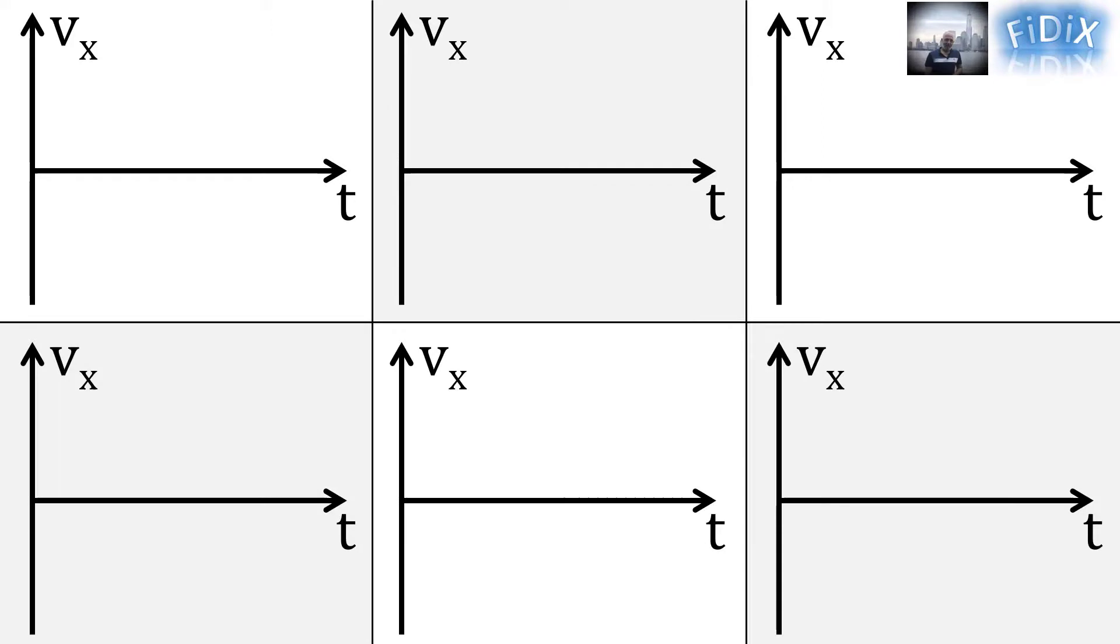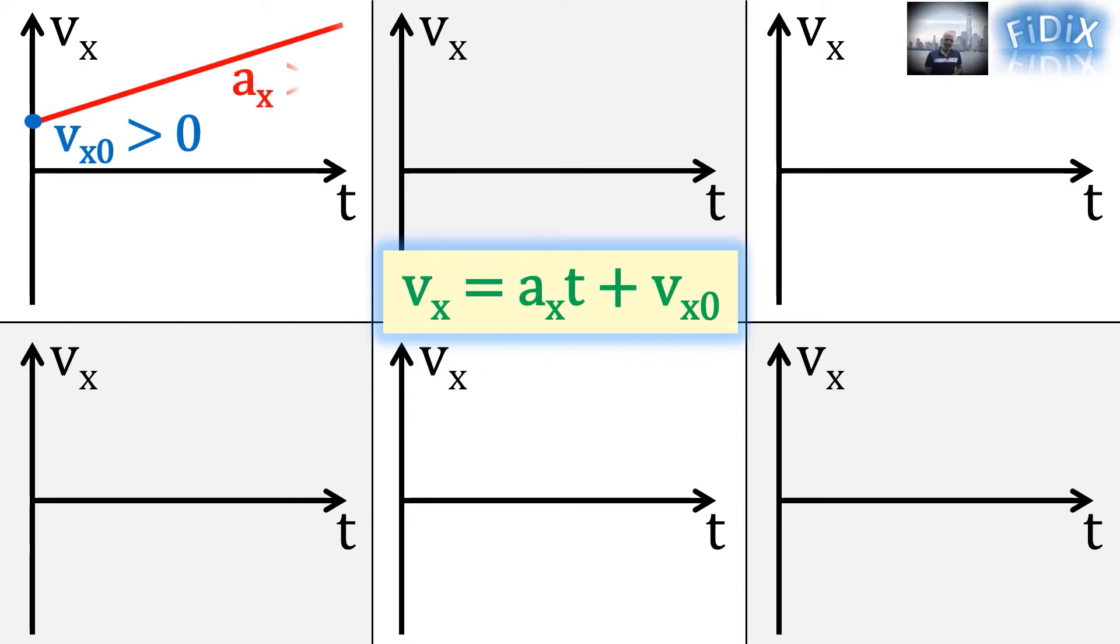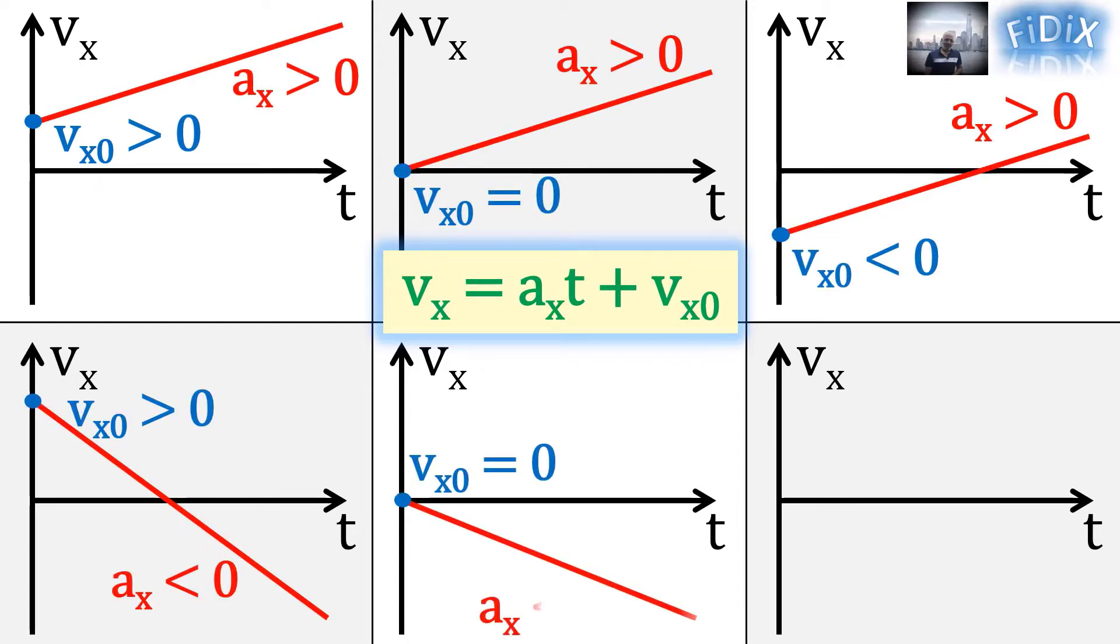For the velocity-time graph, vx satisfies the equation of a straight line having vx₀ as its vertical intercept and ax as its slope. Therefore, we can have six cases depending on the signs of vx₀ and ax.